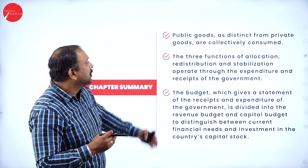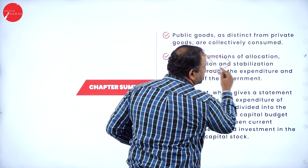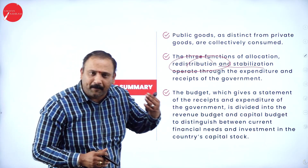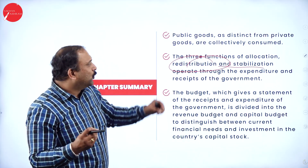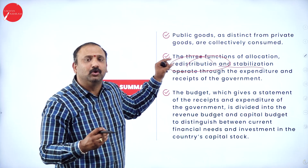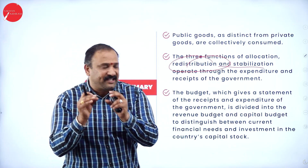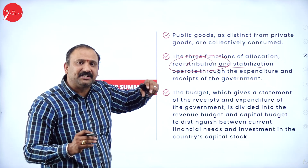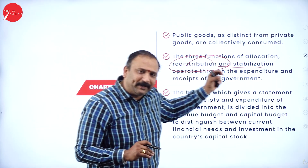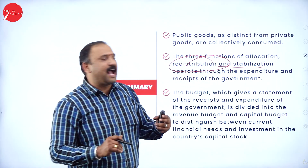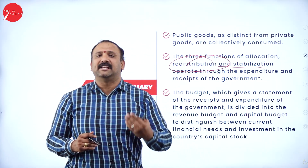There are three functions: allocation, redistribution, and stabilization, through which we operate the government's expenditure and receipts. The government gets money which is allocated to different sectors of the economy. The money is distributed among the various sectors that are in need, and there would be stabilization where the government wants to bring control over certain sectors. The receipts are the income and expenditures are the expenses for the government.